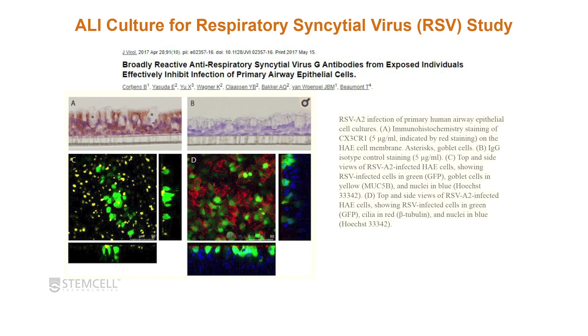It's well known that RSV selectively infects ciliated cells. You can see in these images that the GFP-tagged virus is inside the epithelial cells — specifically in ciliated cells and not in goblet cells.